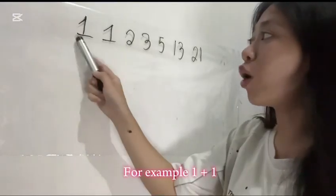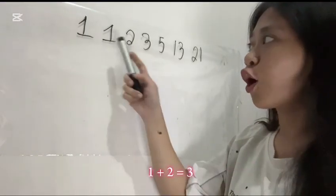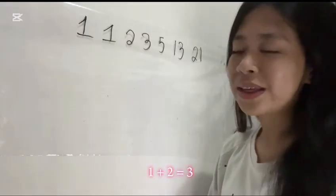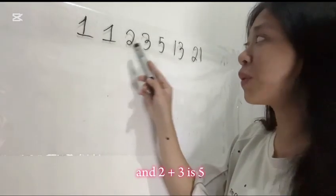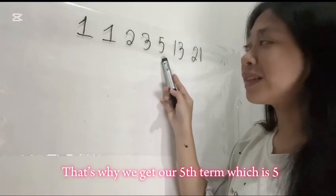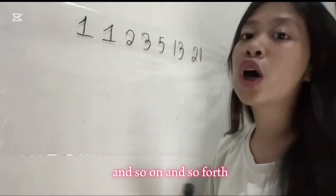For example, 1 plus 1, that's why we get our third term which is 2. 1 plus 2 equals 3, that's why we get our fourth term which is 3. And 2 plus 3 is 5, that's why we get our fifth term which is 5. And so on and so forth.